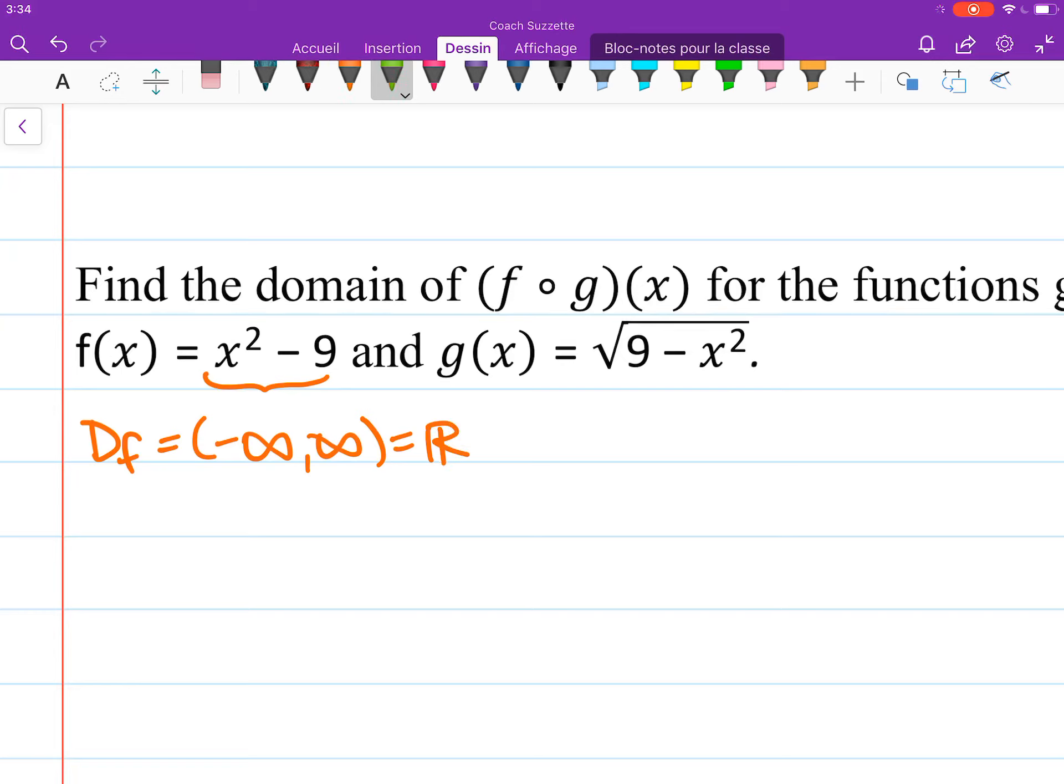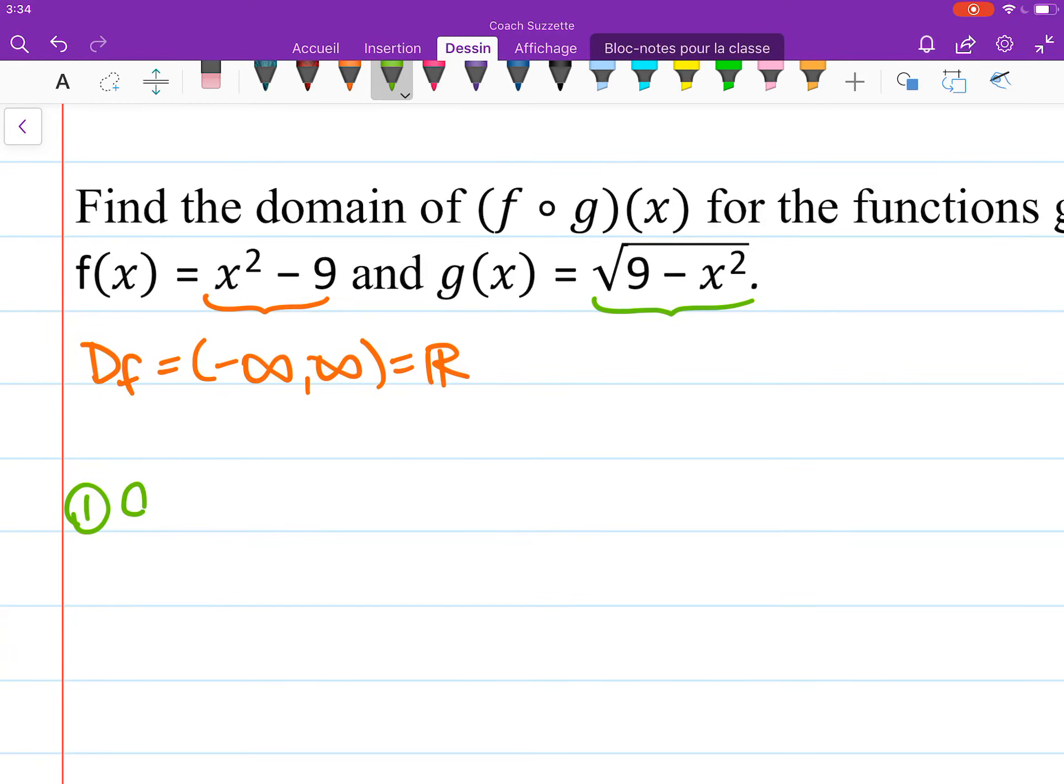But what about this square root function? Well, we need the domain as the set of all real numbers such that we have non-negative numbers under the square root, which is to say we need 9 - x² ≥ 0.